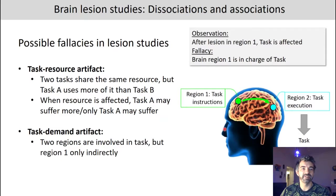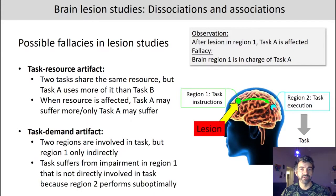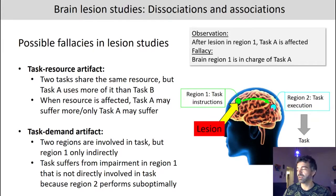A second problem is the so-called task demand artifact, which can occur when two regions are involved in a task and are related to one another, but only one region is directly affected. For example, one region — such as the prefrontal cortex — may be relevant for understanding task instructions, while another region is responsible for actual task execution. If a lesion affects the instruction-understanding region, task performance will appear impaired, and the fallacy would be concluding that this region is responsible for the task itself, rather than just for understanding the instructions.